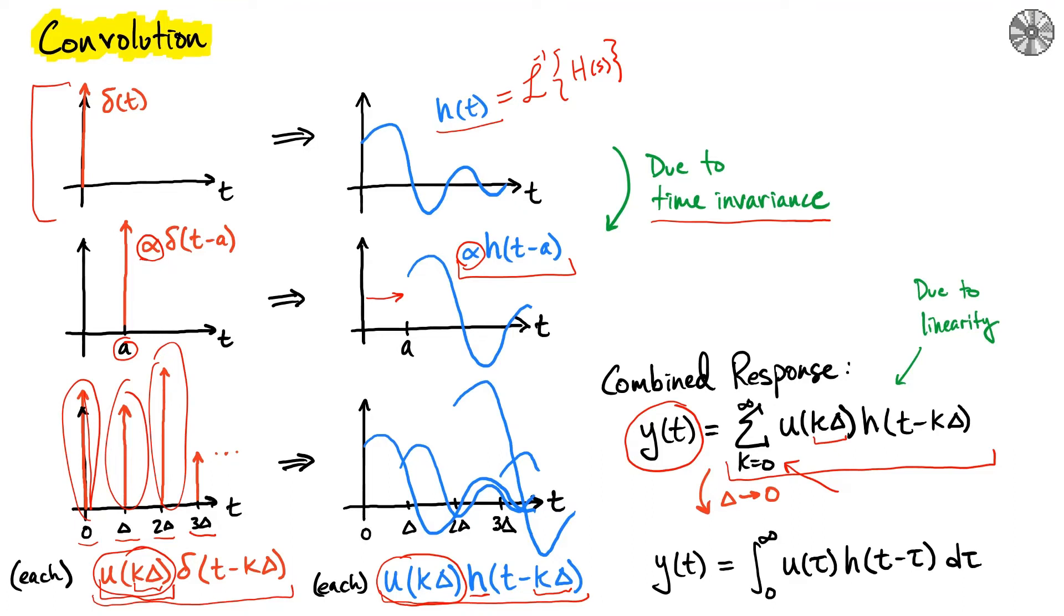If we have the sum over all these different inputs at various k deltas, we can take that delta closer and closer to zero. This means these deltas are no longer separated by a relatively large range; they're actually stacked right next to each other. If we take delta to zero, we can represent the sum as an integral. The tau represents the shift, and now these aren't discrete deltas but a continuous function u(tau)—this is the input we're going to apply to this system.